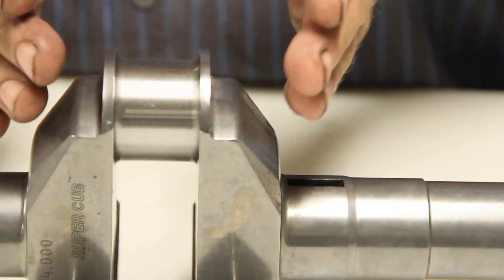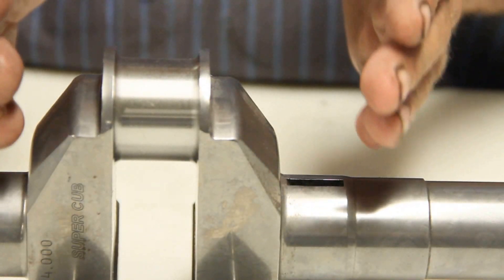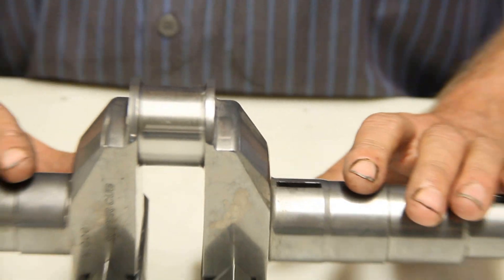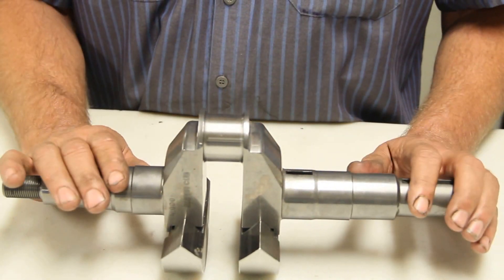Make sure your cam lobes are far enough apart. You've got to kind of mock the engine up before you actually build it, because you've got to make sure everything is going to be missing like it should be.